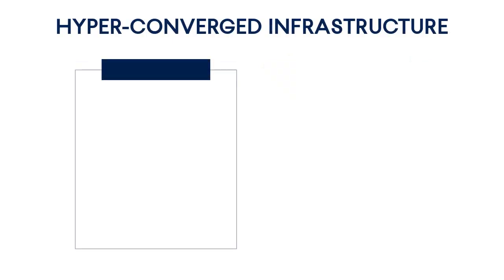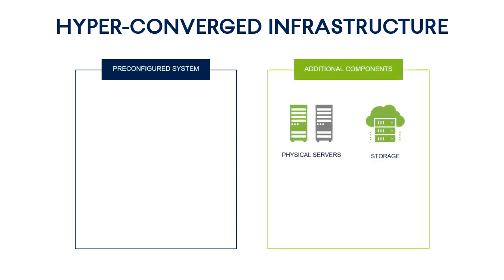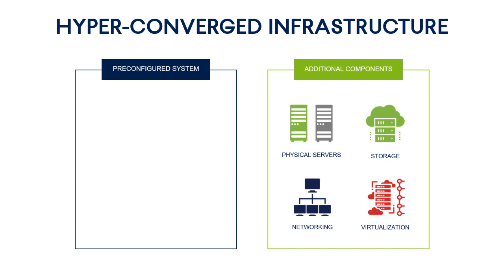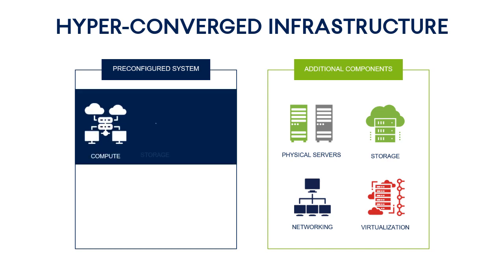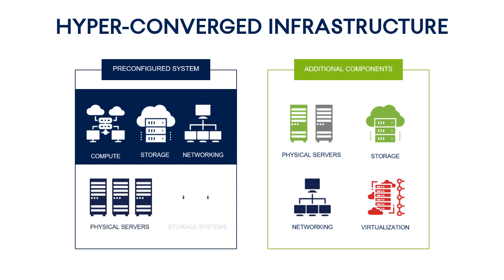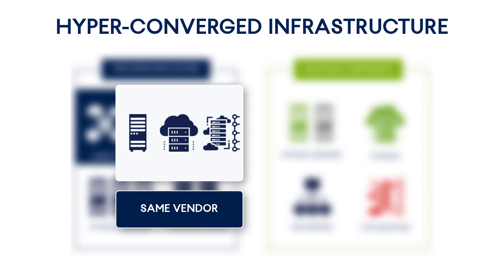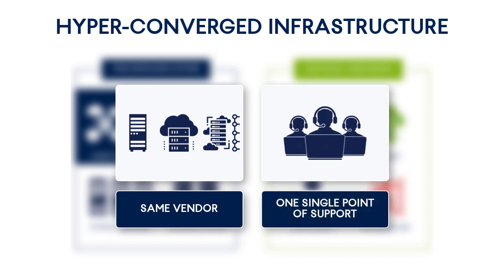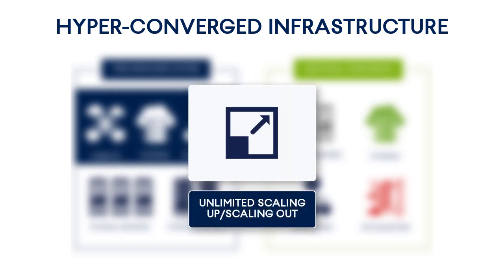The hyperconverged infrastructure resembles the converged infrastructure, but takes the convergence a step further. In particular, the hyperconverged infrastructure is software-defined. It means that the compute, storage, and network are abstracted away from the physical hardware. As a result, it is possible to add nodes, systems, virtual machines, storage, and other components without having any awareness of the underlying physical hardware. In contrast to the converged infrastructure, the hyperconverged infrastructure implies that all the individual components come from the same vendor. Thus, if some hardware components go down or software components need to be updated to address security threats, it is easy to resolve those issues quickly, since there is one single point of support. Moreover, it is easy to scale out or scale up such a system.